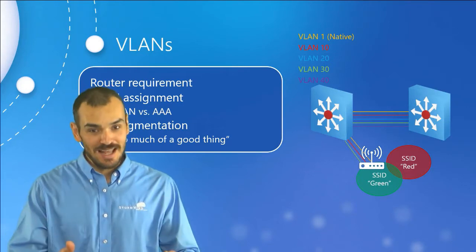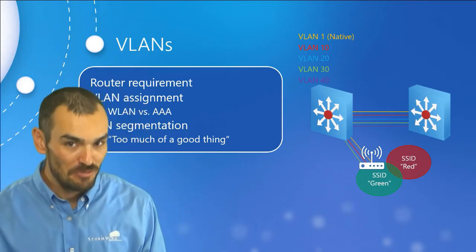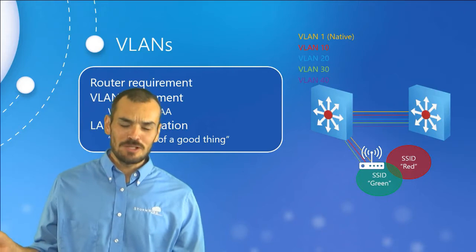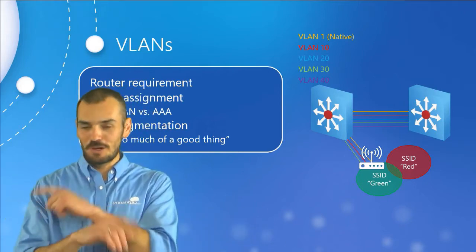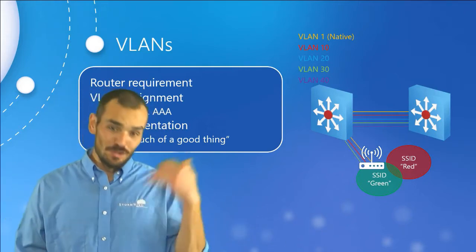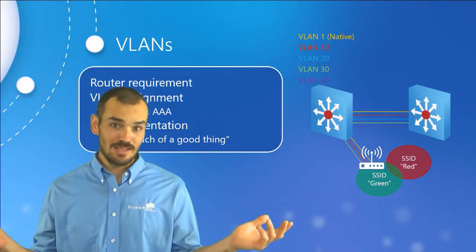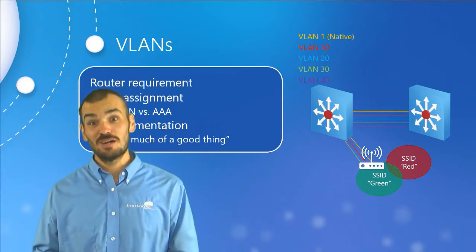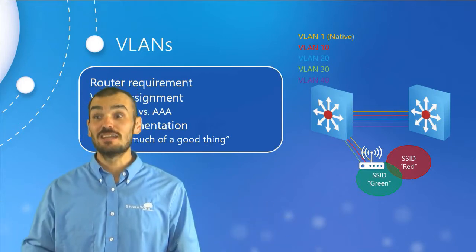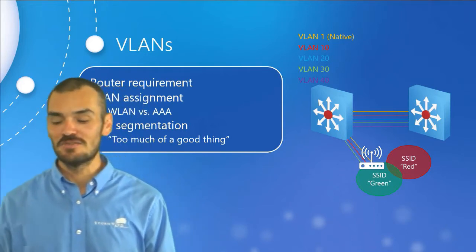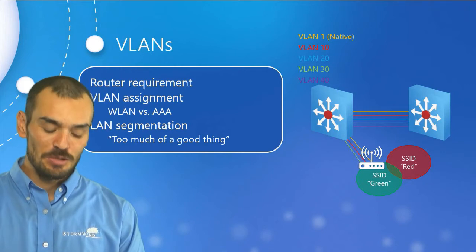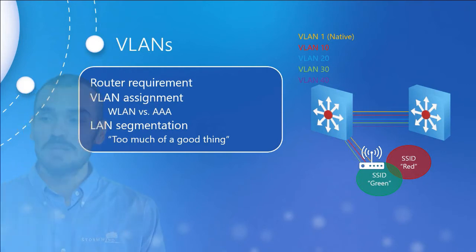The controller method is simpler to implement but not as scalable as the AAA method. For example, if a red client accidentally connects to the green SSID, they can't access their resources. Anytime we can make it easier for users, we want to take advantage of that. The next consideration is LAN segmentation: VLANs on the wired side improve efficiency, bandwidth, and security, and we get the same benefits on the wireless side.